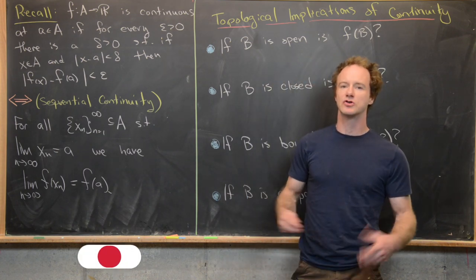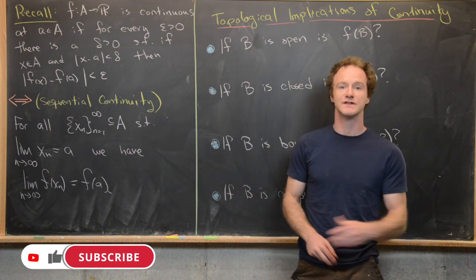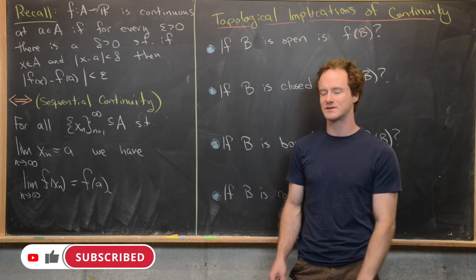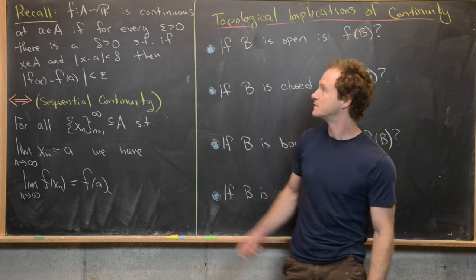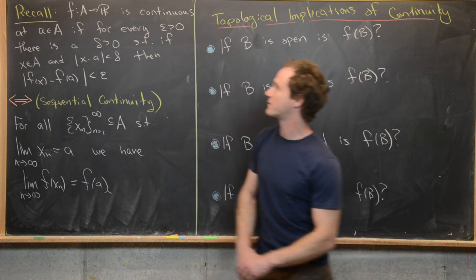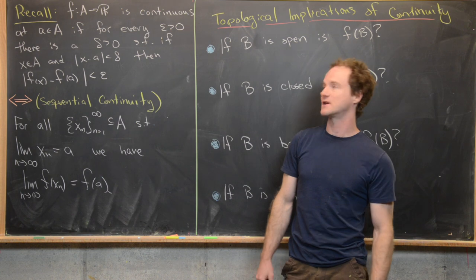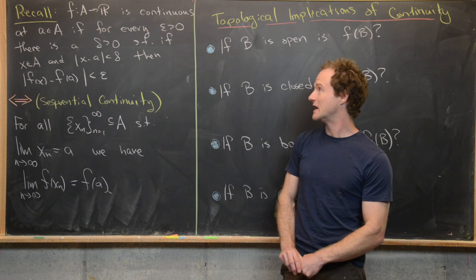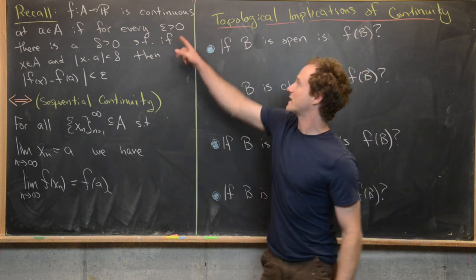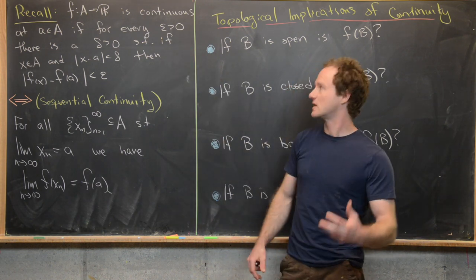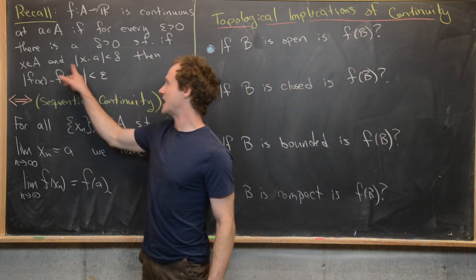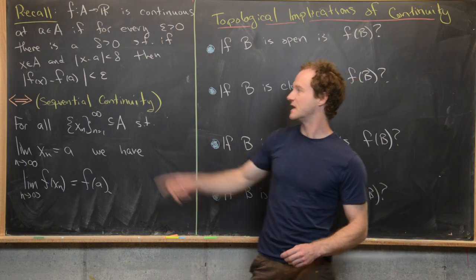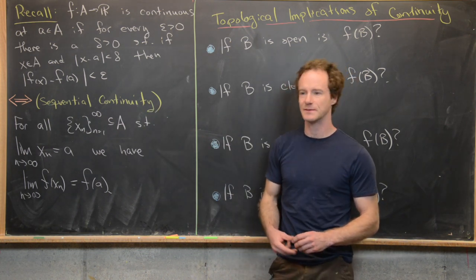We spent a couple of videos looking at the notion of continuity among functions of real numbers. Let's recall that quickly and then look at some topological implications. So f from A to R, where A is a subset of the real numbers, is continuous at a point little a in A if for every epsilon greater than zero there is a delta greater than zero such that if x is in A and the absolute value of x minus a is less than delta, then the absolute value of f(x) minus f(a) is less than epsilon.